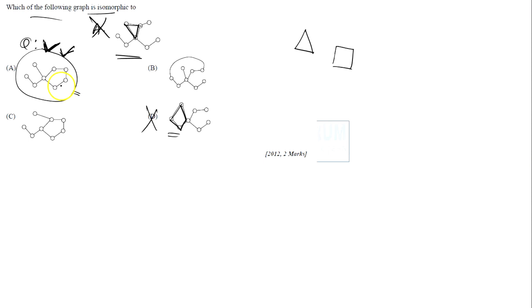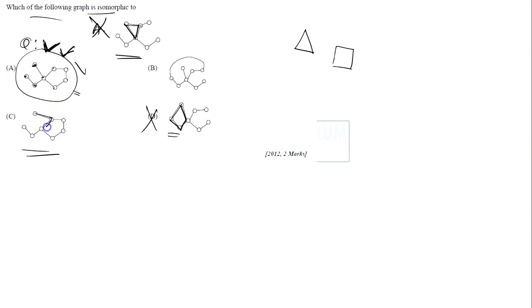Now looking at options B and C: in the question graph, the vertex degrees are 1, 1, 2, 4, 2, 2, 2, 2 — there is no vertex of degree 3. But in option C, you can see this vertex has degree 3, so option C is also eliminated. Therefore, the answer is option B.